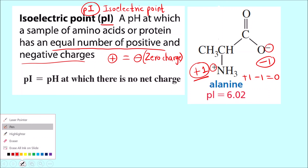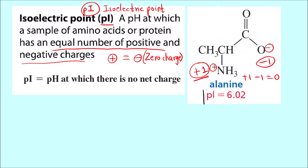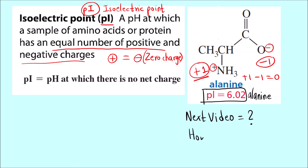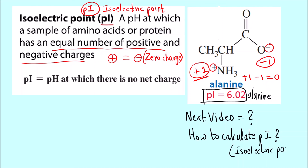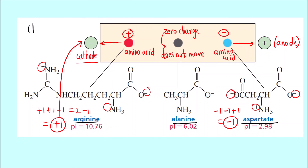For example, 6.02 is the isoelectric point for alanine. In the next video, we will see how to calculate the isoelectric point for any given amino acid — how to calculate the value of pI. Electrophoresis is a separation technique where the basic principle is the overall charge of the amino acids. I hope you have understood this technique. Thank you.